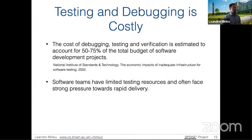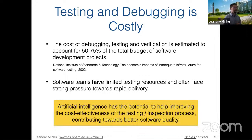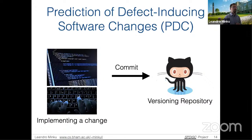The cost of debugging, testing, and verification is very large — estimated to account for 50 to 75% of the total budget of software development projects. Even spending all that time and money, software teams still deal with limited testing resources and very strong pressure towards rapid delivery. The good news is that artificial intelligence has the potential to help improve the cost-effectiveness of the testing or inspection process, ultimately contributing towards better software quality. One of the ways AI could help is through prediction of defect-inducing software change, PDC.